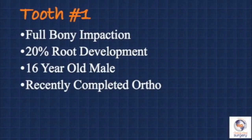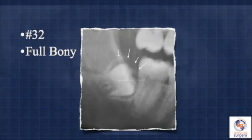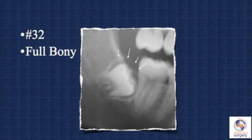Our patient for this case is a healthy 16-year-old young man who recently completed his orthodontic treatment and is now presenting for removal of his wisdom teeth on referral from his orthodontist. As you can see from the panoramic radiograph, he has four full bony impacted third molar teeth that are fairly close to the surface and show maybe about 20% development of their roots. It is a mesioangular full bony impaction. You can see from the arrows indicated that there is bone visible completely around the coronal portion of the tooth.